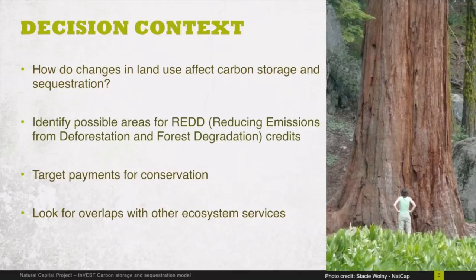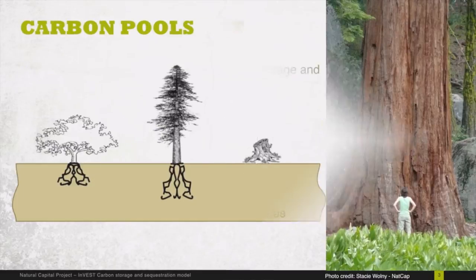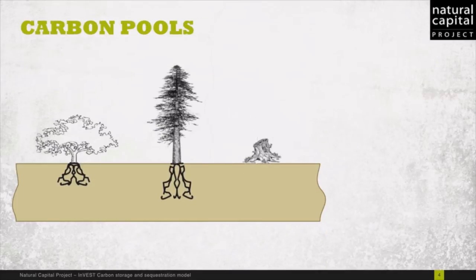The model is also useful for looking for overlaps with other ecosystem services. Often, areas with high carbon storage correspond with areas of high biodiversity, watershed services, and other ecosystem services that might be of interest. The way the model works is to consider five carbon pools.